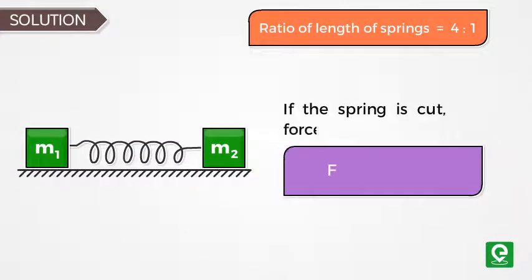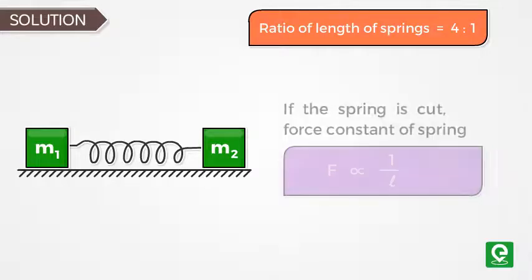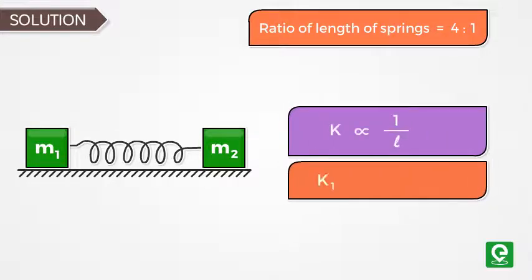If the spring is cut, the force constant of spring is inversely proportional to length. This implies k1·l1 = k2·l2 = k·l.